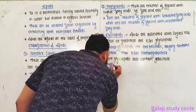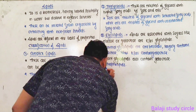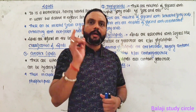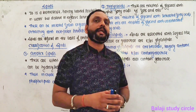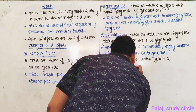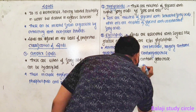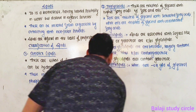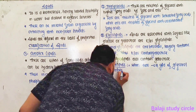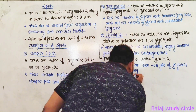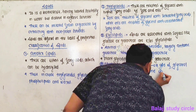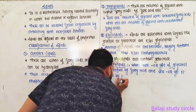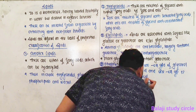Next is phospholipids. In phospholipids, two hydroxyl groups of glycerol are esterified by fatty acids, and one hydroxyl group is esterified by phosphoric acid.